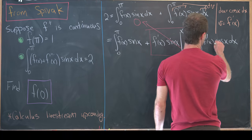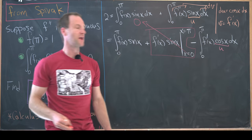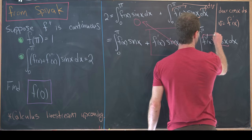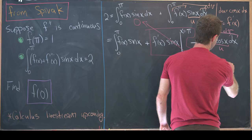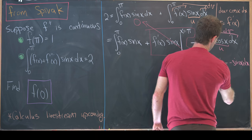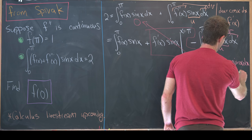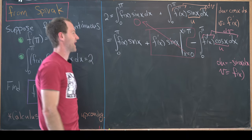Let's maybe let u equal this cos(x) term and then we'll let dv be everything left over. So that tells us that du is -sin(x) dx and then v is just equal to f(x). Antiderivative of f' is f. Let's see what that will leave us with.